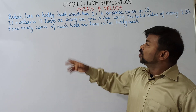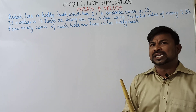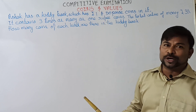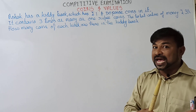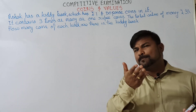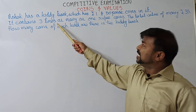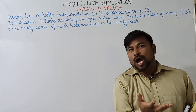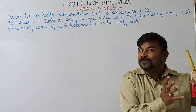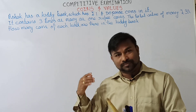Let's come across this sum now. Ashok has a kiddie bank in which he has coins of 1 rupee and coins of 50 paise. He has given the number of 1 rupee coins and the number of 50 paise coins. What's the relation between them? It contains three times as many 50 paise coins. The number of 50 paise coins are exactly equal to three times of the 1 rupee coins.